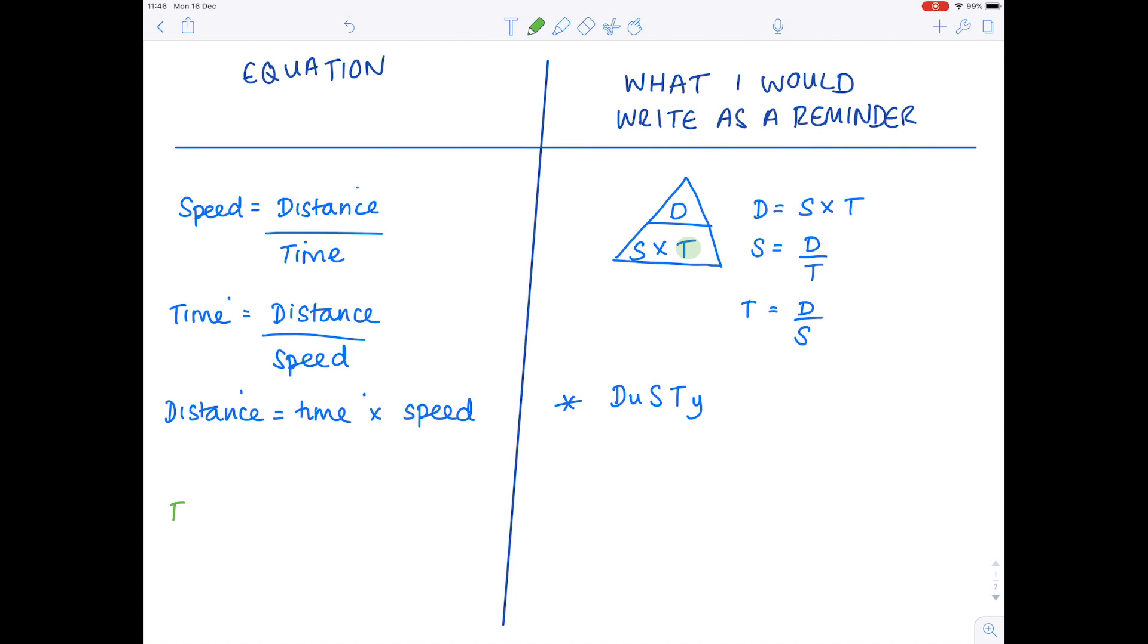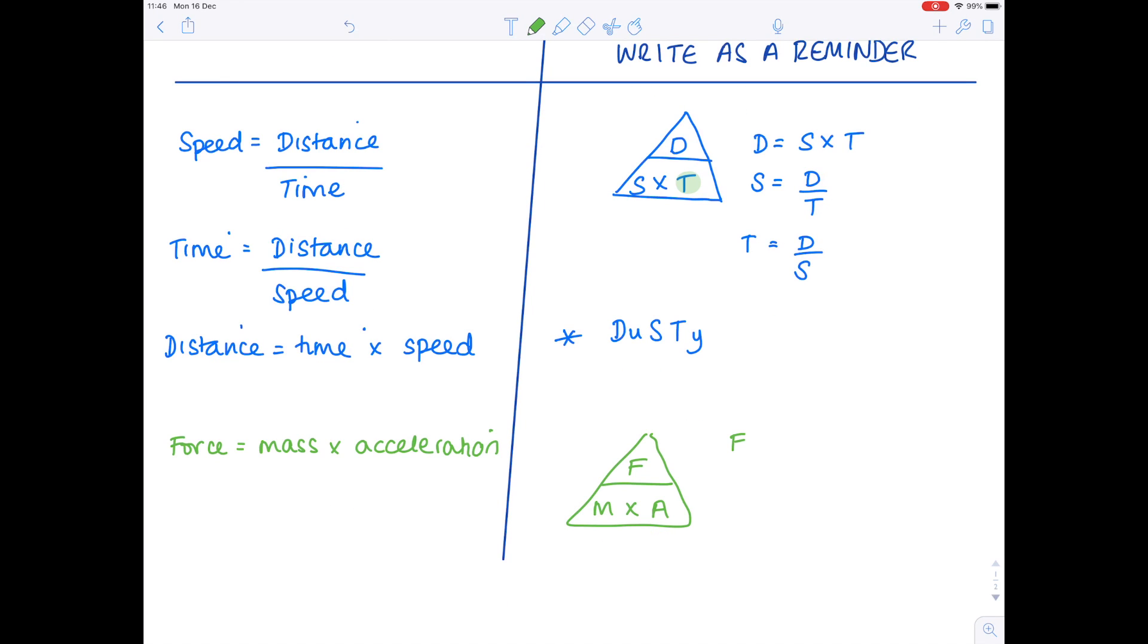Second equation. Force equals mass times acceleration. Again, there are three different versions of this equation. But this video will literally be two hours long if I show you every single one. We're just going to go straight into drawing the formula triangle. So F goes at the top, followed by MA. So let's write out the variations. Well, force equals mass times acceleration. Mass equals force divided by acceleration. And acceleration equals force divided by mass. So perfect, we have our three versions. How do I remember this? Well, I used to remember from my auntie.